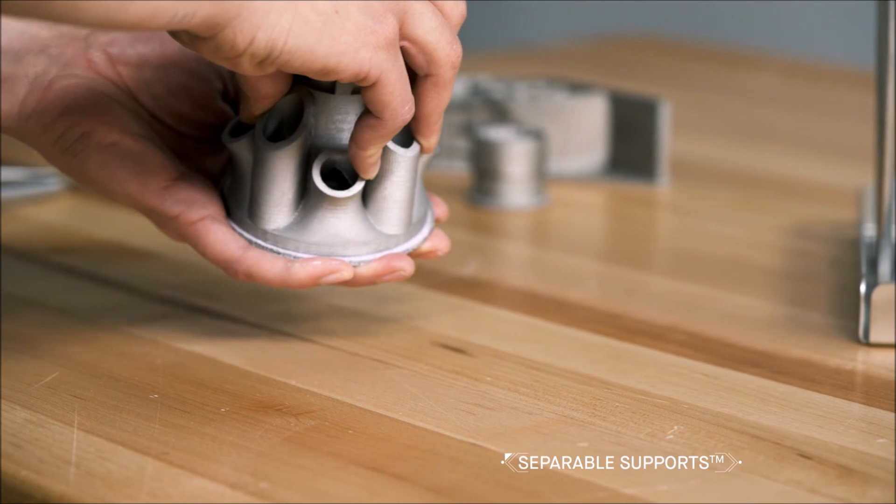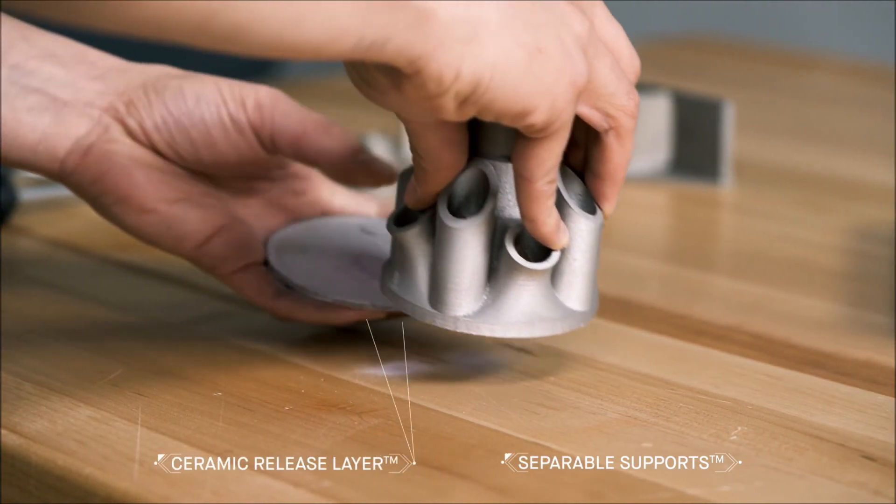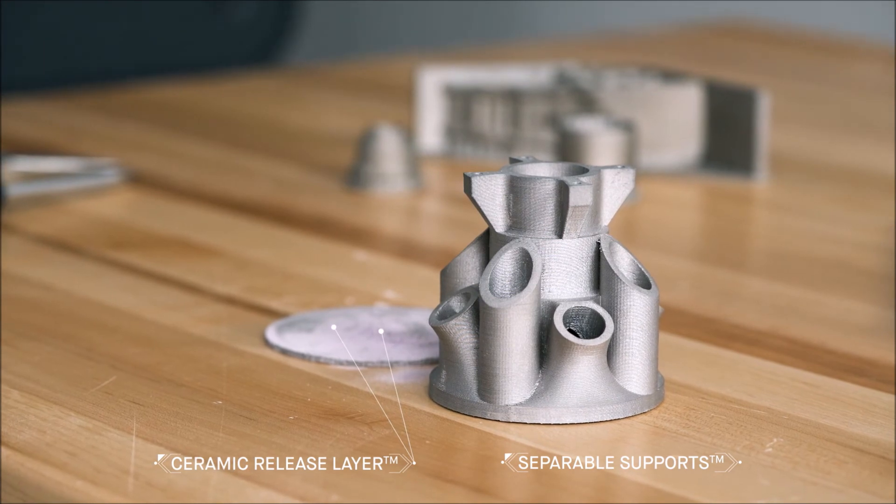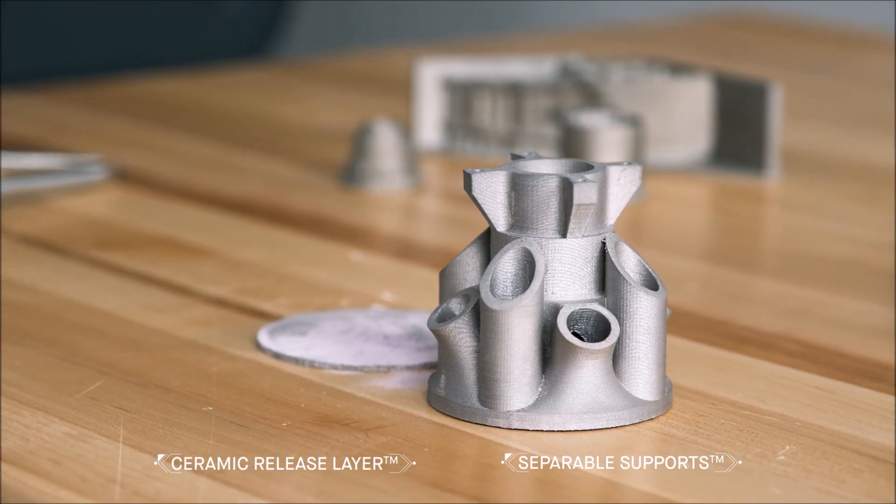Designed to simplify post-processing, the ceramic release layer printed between the part and its supports doesn't bond to the metal, enabling separable supports that are easily removed by hand.